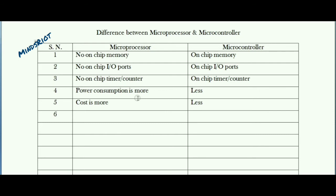Now in terms of accessing time, to access externally connected components time requirement is more, hence access time is more in case of microprocessor. In case of microcontroller, as these components are on-chip, accessing time is less. Also, if external components are connected to the microprocessor the circuit becomes bulky, whereas in case of microcontroller components are on-chip, hence the circuit is compact.